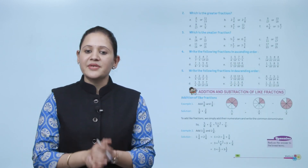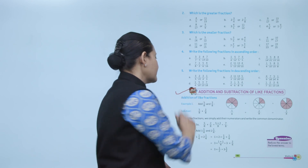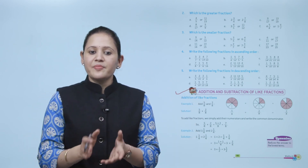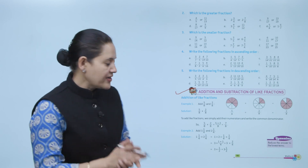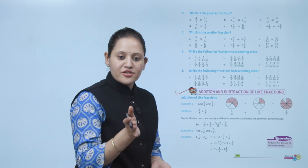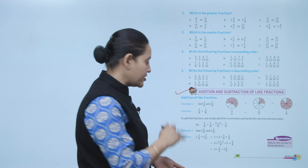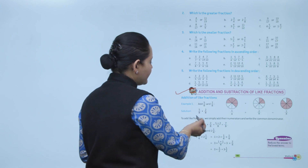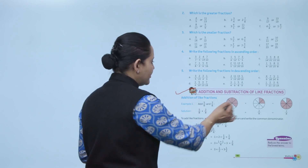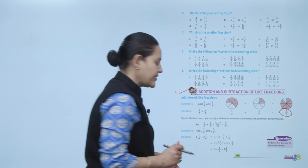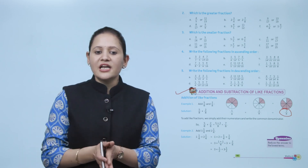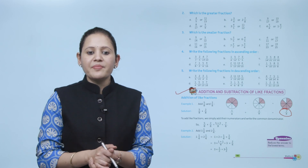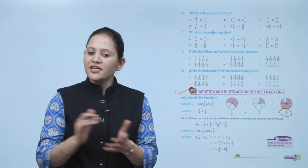Next is addition and subtraction of like fractions. To add like fractions, simply add the numerators and write the common denominator. Example: add 5 by 8 and 2 by 8. 5 plus 2 equals 7, and the common denominator is 8, so the answer is 7 by 8.